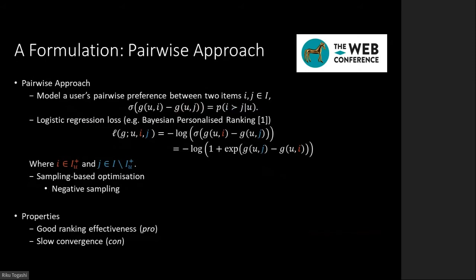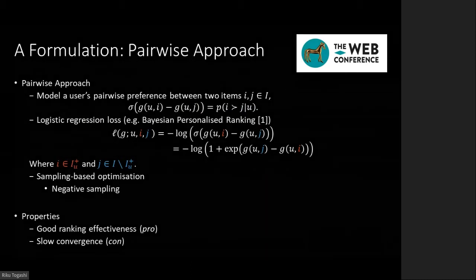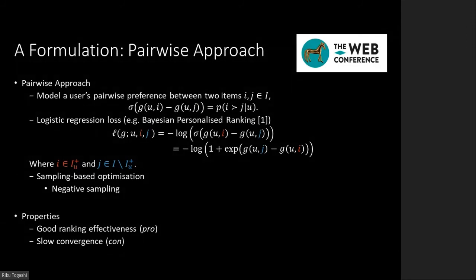The pairwise approach formulates the recommendation as another binary classification. This approach aims to estimate a user's pairwise preference between two items. The logistic regression loss is widely adopted. Because it is often infeasible to compute the losses over all possible pairs of items for each user, sampling-based optimization is widely adopted. The choice of a negative sampling strategy is essential in terms of both efficiency and effectiveness. In contrast to the pointwise approach, the pairwise counterpart can achieve good ranking effectiveness but often compromises convergence time in model training.